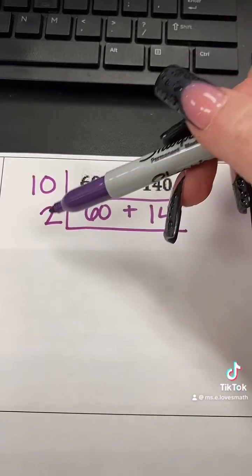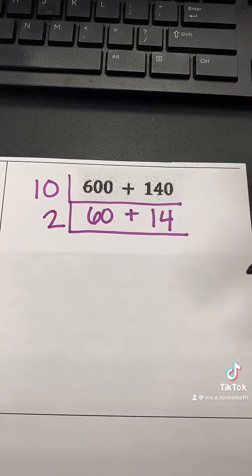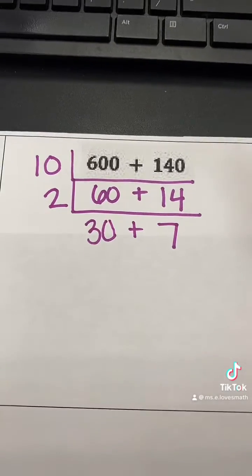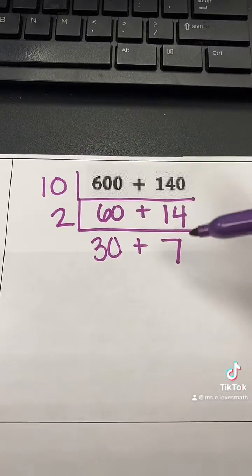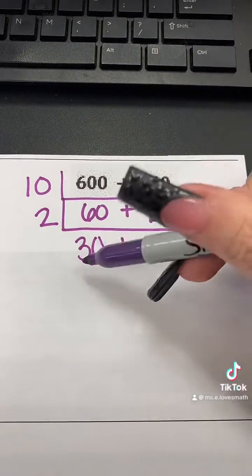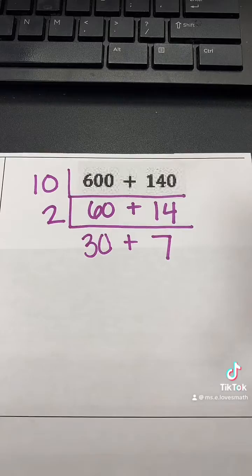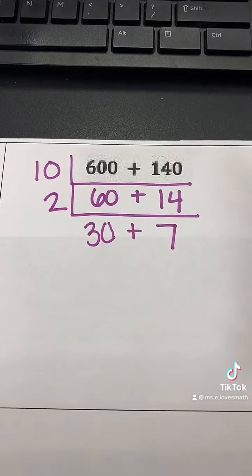Our magic number of 2 will work because both of these are even. And 60 divided by 2 is 30. 14 divided by 2 is 7. 30 and 7 do not have any factors in common, so we are done.